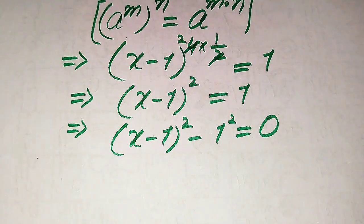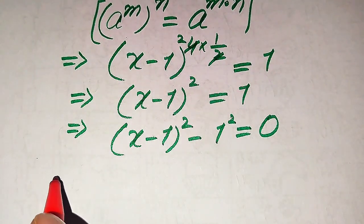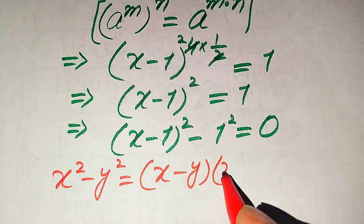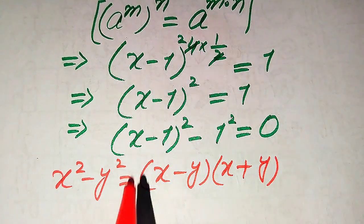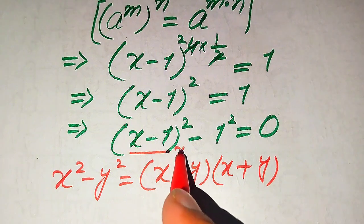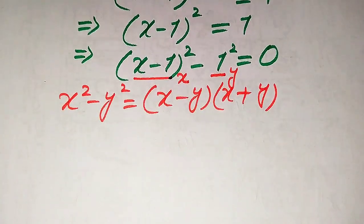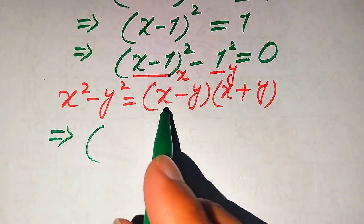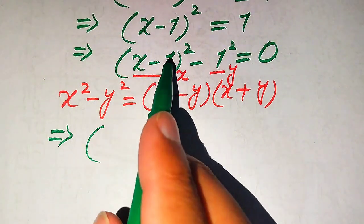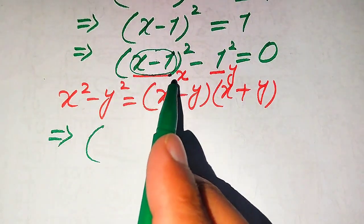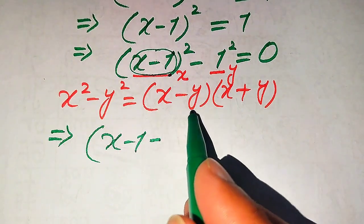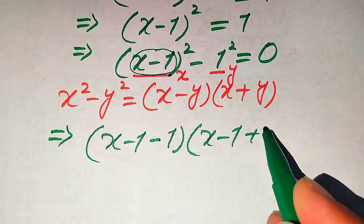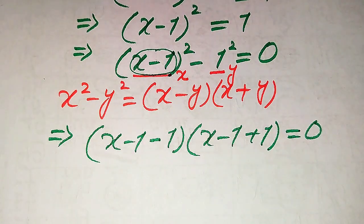Now we use the algebraic formula: x squared minus y squared equals (x minus y)(x plus y). Here the base of the first term is our x and the base of the second term is our y. We substitute these two values: x is (x minus 1) and y is 1. So we write (x minus 1 minus 1) times (x minus 1 plus 1) equals 0.